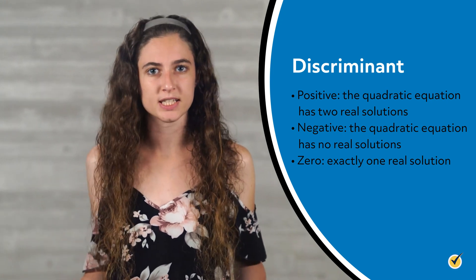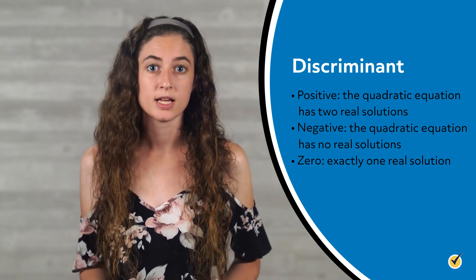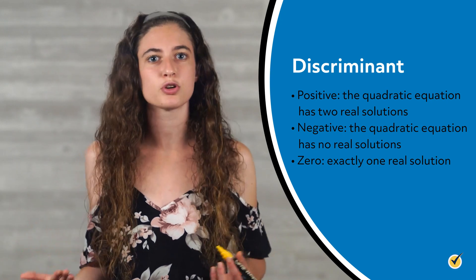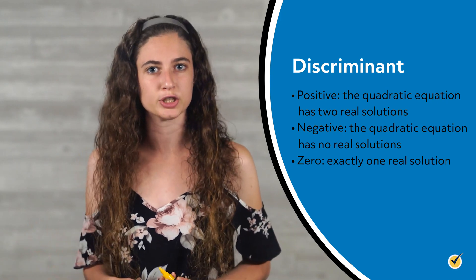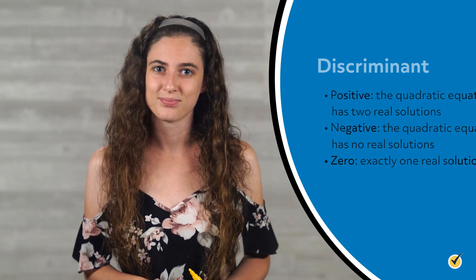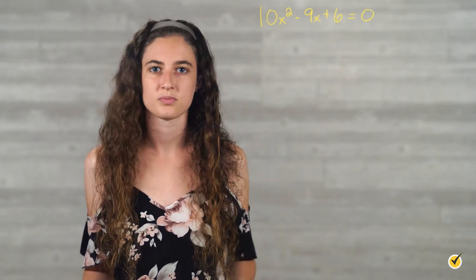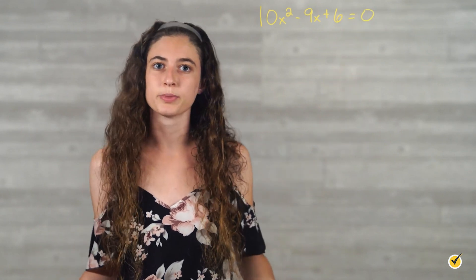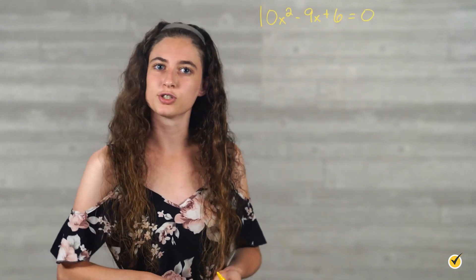In the previous example, the discriminant was 25. Since it's a positive number, we know that the quadratic equation has two real solutions, which is what we found when we worked it out. Let's look at another example. Consider the quadratic equation 10x squared minus 9x plus 6 equals 0, and let's use the quadratic formula to find the solutions for x.